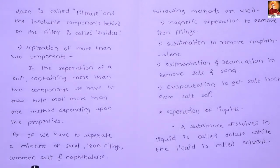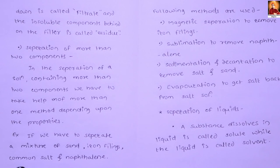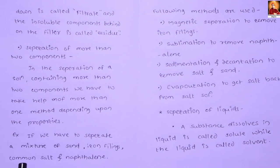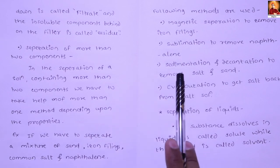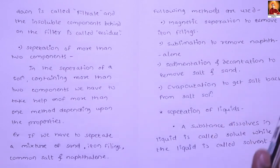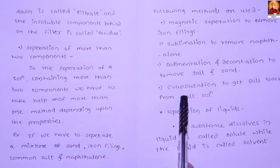Common salt and sand are separated next. Salt is water-soluble, so we dissolve the mixture in water. Then we use the filtration method to separate sand from the water containing salt. We then use sedimentation and decantation to remove the sand, leaving the salt solution, which is further separated by evaporation to get salt crystals.